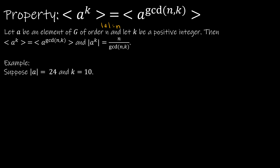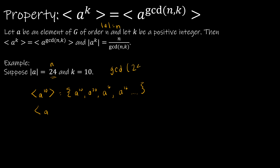I really have to look at an example for it to make sense to me, so here's an example for those of you who learn like me. Suppose the order of A is 24, so N is 24 and K is 10. Let's take a look at what we can determine based on this theorem. The subgroup generated by A to the 10th — which would be A to the 10th, A to the 20th, A to the 30th — but this has an order of 24, so A to the 30th would really be A to the 6th, and then A to the 16th, and so on. That subgroup is exactly the same as the subgroup of A to some number, so let's find out what that number is by finding the GCD, the greatest common divisor of N, which is 24, and 10.